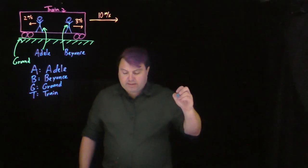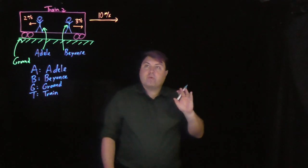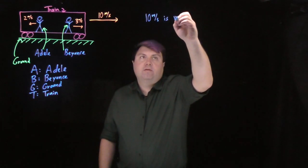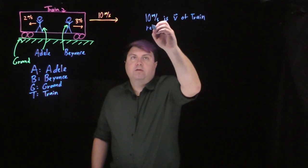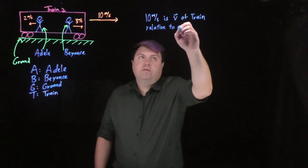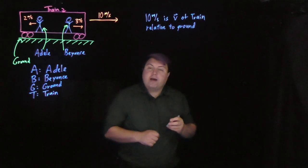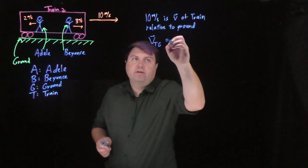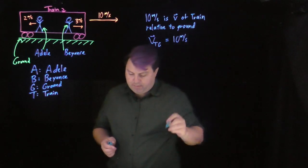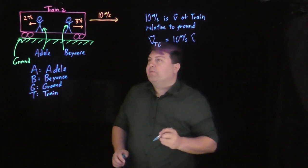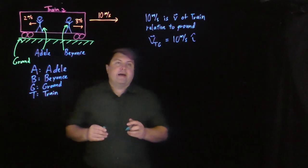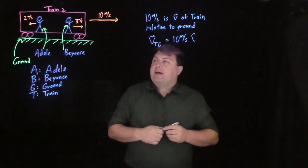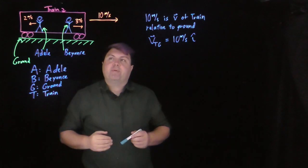When I say the 10 meters per second, that is the train relative to the ground. I can write that as the velocity of the train relative to the ground is 10 meters per second in the i-hat direction. If I was on the ground, I would see the train moving at 10 meters per second in positive i-hat.